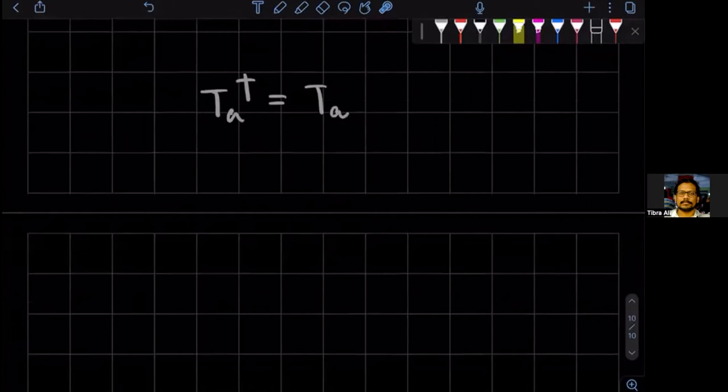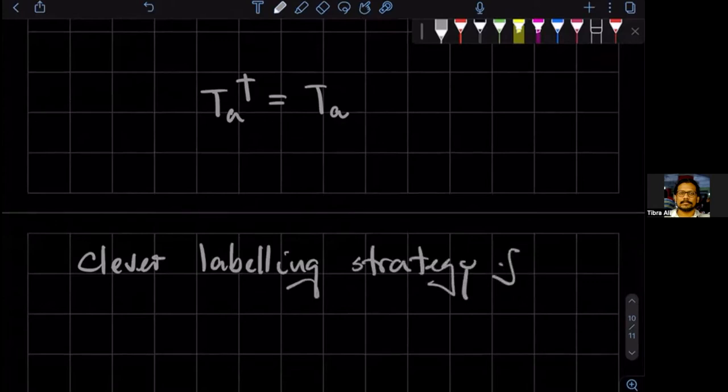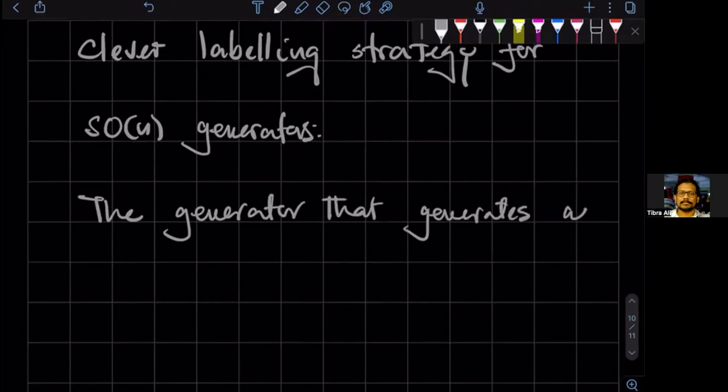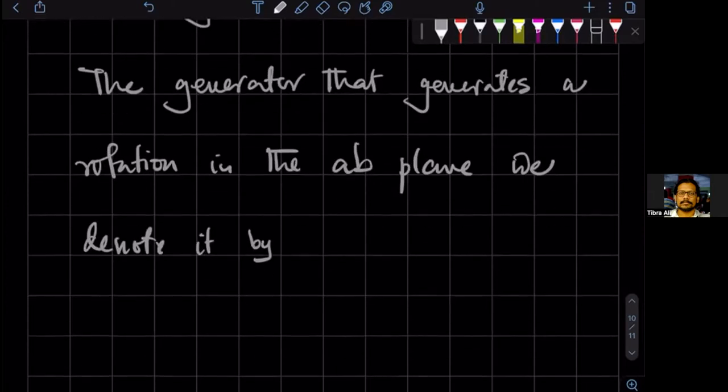Now, we do something clever. We go for a clever labeling strategy for the SO(N) generators. So the generator that generates rotation in the AB plane, we denote it by T superscript AB.